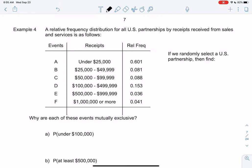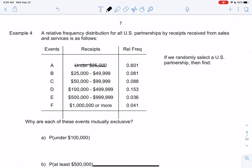We're going to look at a relative frequency distribution table for U.S. partnerships. Partnerships are just like two companies working together, and we're looking at their receipts—how much they receive from sales and services. Under $25,000, $25,000 to $49,999, and so on. These are their relative frequencies, which we just recently learned is the same as probability.